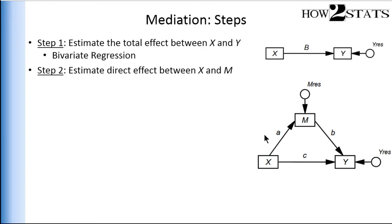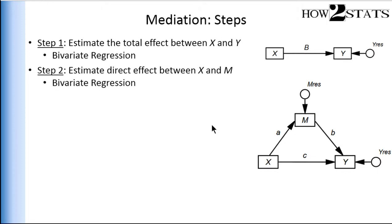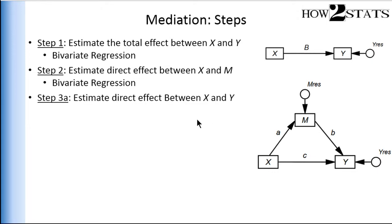That is this term 'a' between x and m — I need to estimate that direct effect. You could consider this a total effect as well, but I usually refer to it as a direct effect. You can estimate it with a bivariate regression, just using the independent variable as a predictor of the mediator.